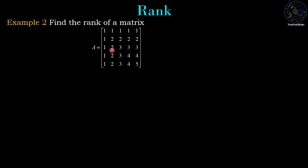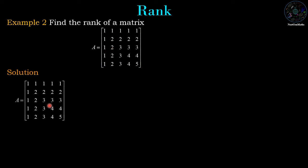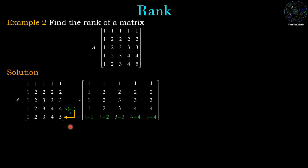Example 2: find the rank of this matrix. We convert it to row echelon form. Row 4 and row 5 are almost the same except for the last entry. We begin with the operation: multiply row 4 by minus 1 and add it to row 5, giving -1, -2, -3, -4, -4. The new row 5 becomes: 0, 0, 0, 0, 1.